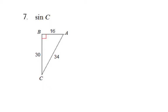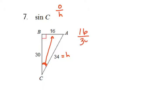We're going to find sine C, so you want to make sure you've identified angle C. Sine is opposite over hypotenuse, so make sure you identify your hypotenuse so that you don't accidentally use it for adjacent or opposite sides. Because we're doing opposite of angle C, it's going to be the one directly across from it. So we're going to have 16 over the hypotenuse, which is 34. They're both even, so you're going to reduce that fraction — that's what sine C is.